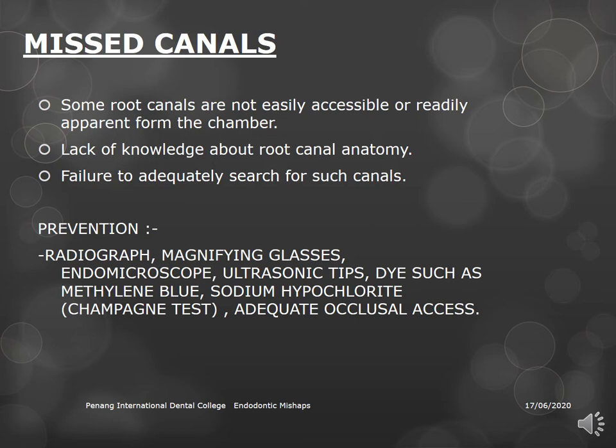Other examples of variant anatomy include the maxillary second premolar, which may have buccal and lingual canals instead of one, and the maxillary first molar, which can have four canals including a second mesiobuccal canal. You must have thorough knowledge that these alternate anatomies can be present and actively search for them.